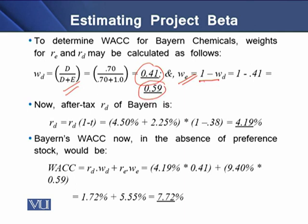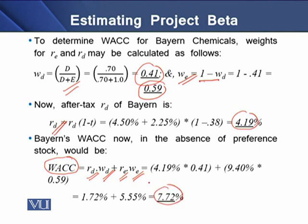We also determine the after-tax cost of debt, which is 4.19 percent. Now, having determined the weights of debt and equity, the cost of debt, and the cost of equity, we compute Barren Chemicals' overall cost of capital, known as WACC. Putting in the values of after-tax cost of debt, weight of debt, cost of equity, and weight of equity, the WACC comes to 7.72 percent, which is the overall cost of capital for Barren Chemicals.